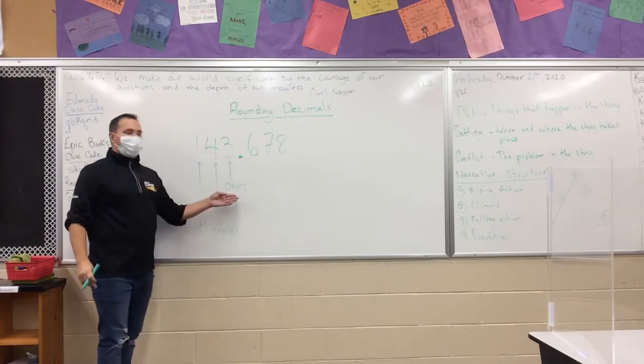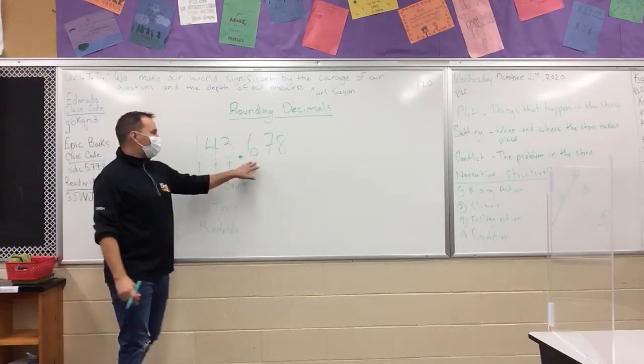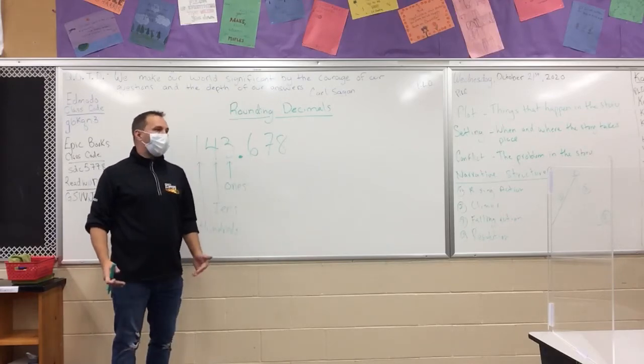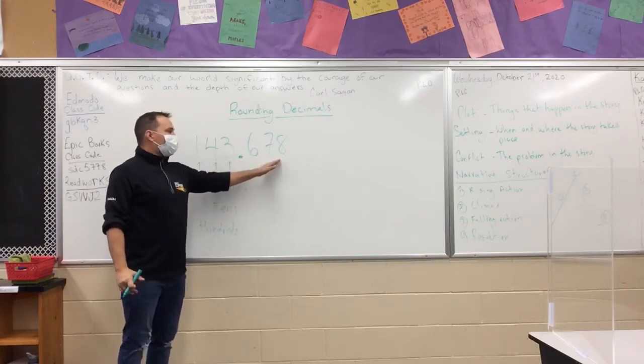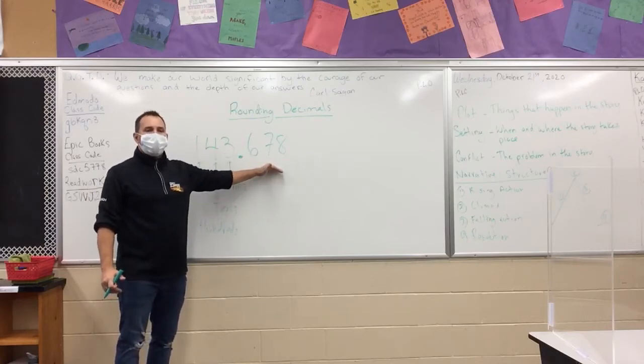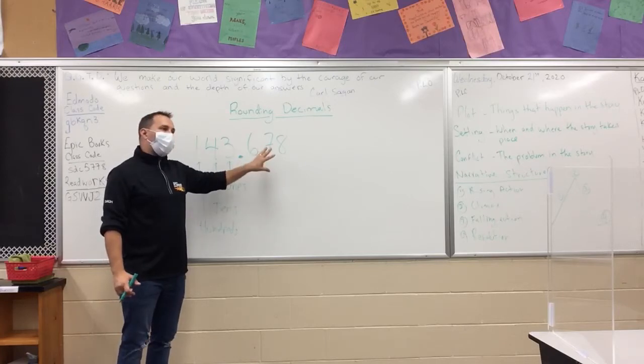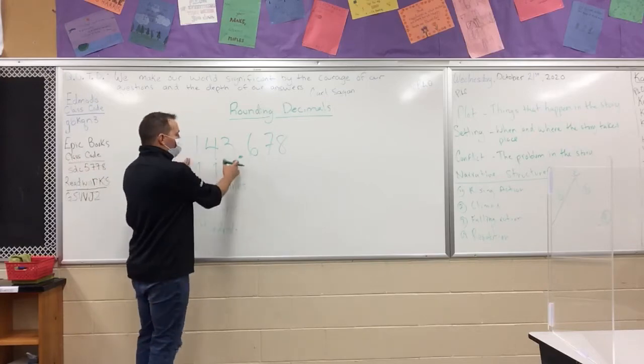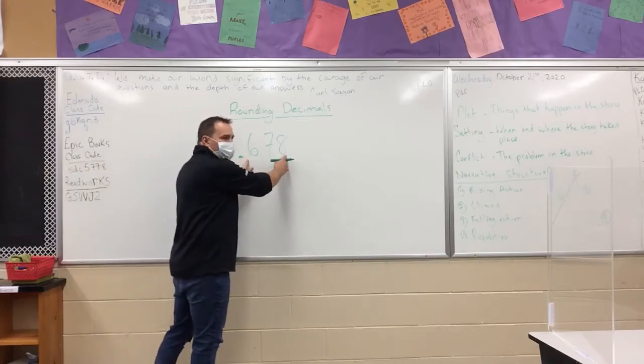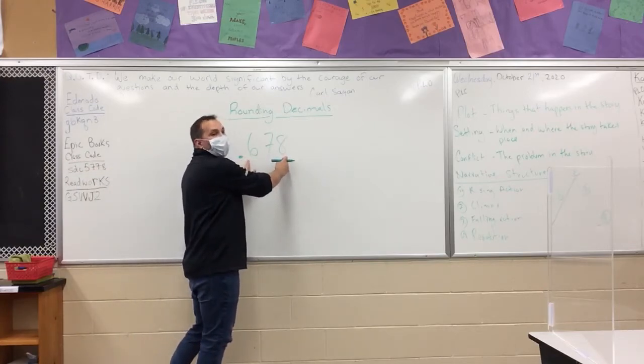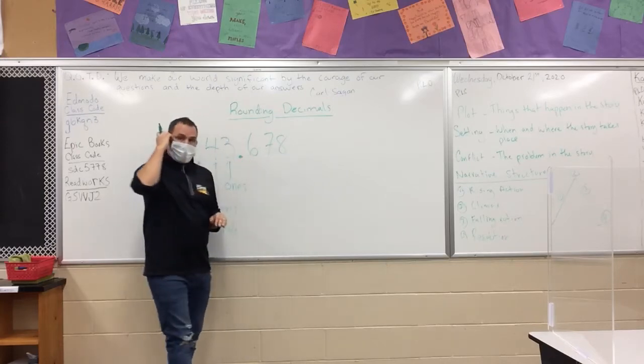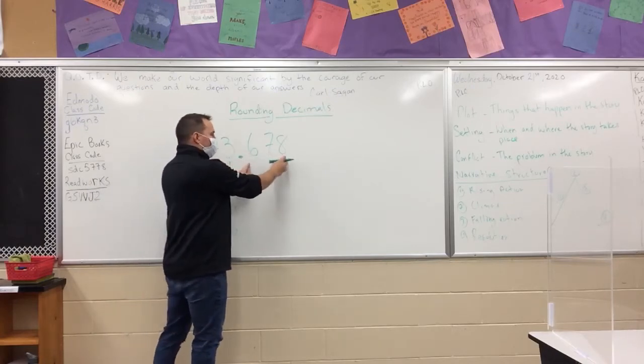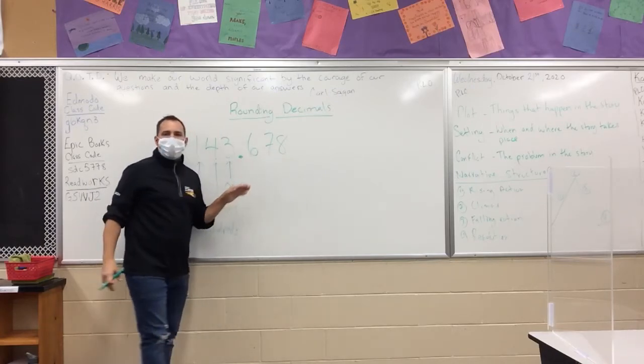The thing that's different about decimals is we don't have a ones place because these are just parts of a whole. The 143 is the whole number. 143 decimal 678 is a part of another whole. If we were going to say like money, we've got 143 dollars and 678 of another dollar. If we wanted to talk about bananas, we've got 143 bananas and 0.678 of another banana.